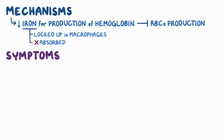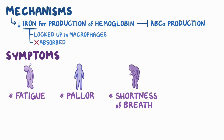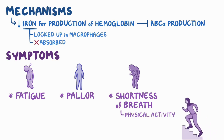Symptoms of anemia of chronic disease are usually mild, including fatigue, pallor, and shortness of breath, and the latter is usually associated with physical activity, like walking up three flights of stairs.